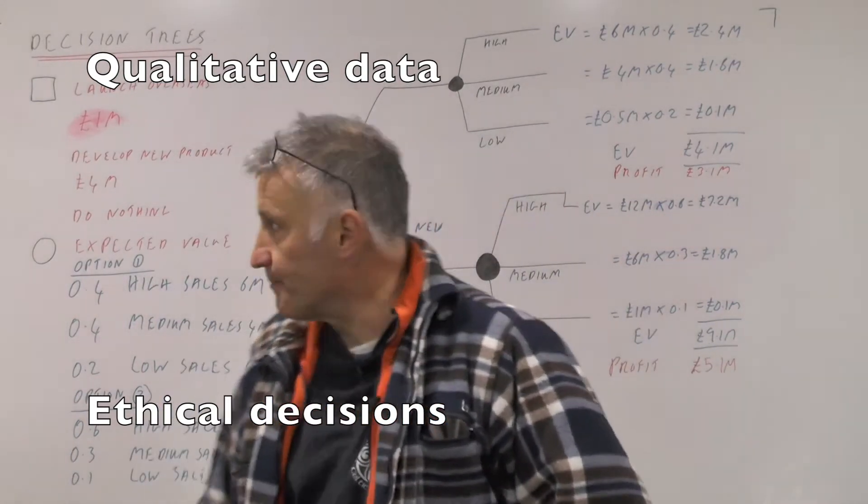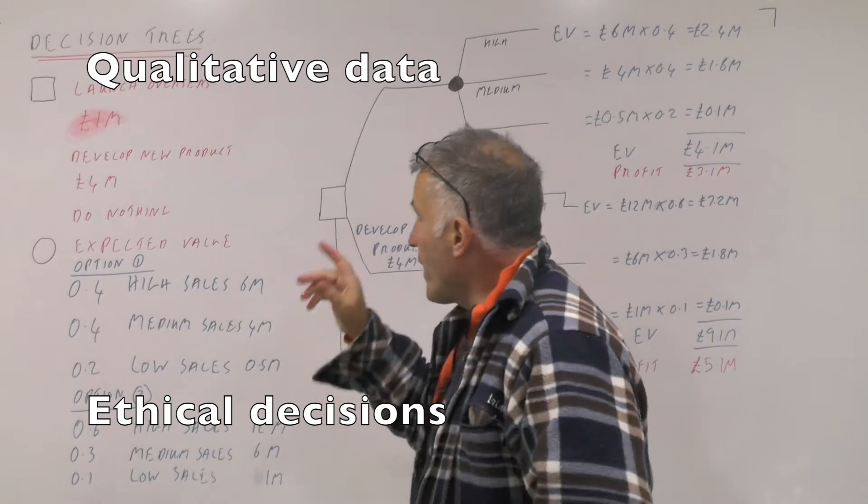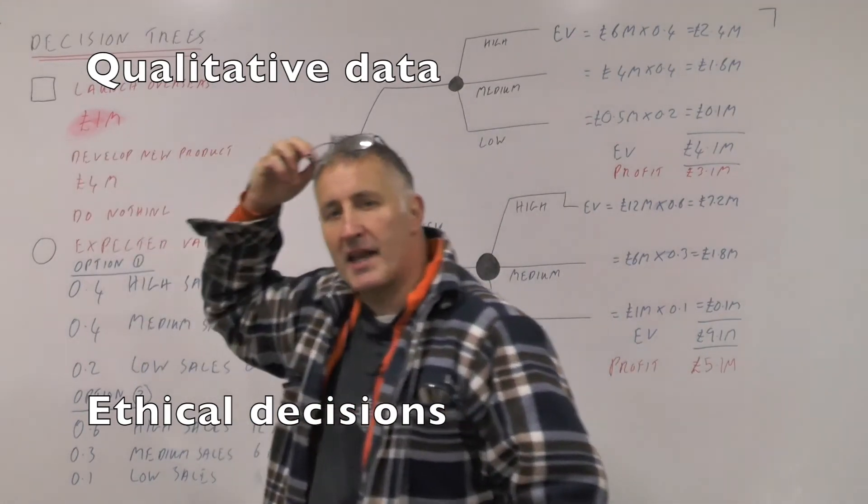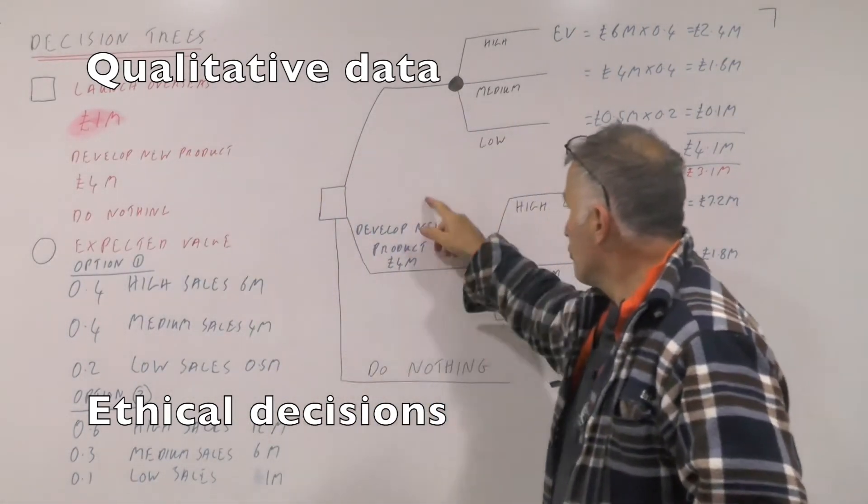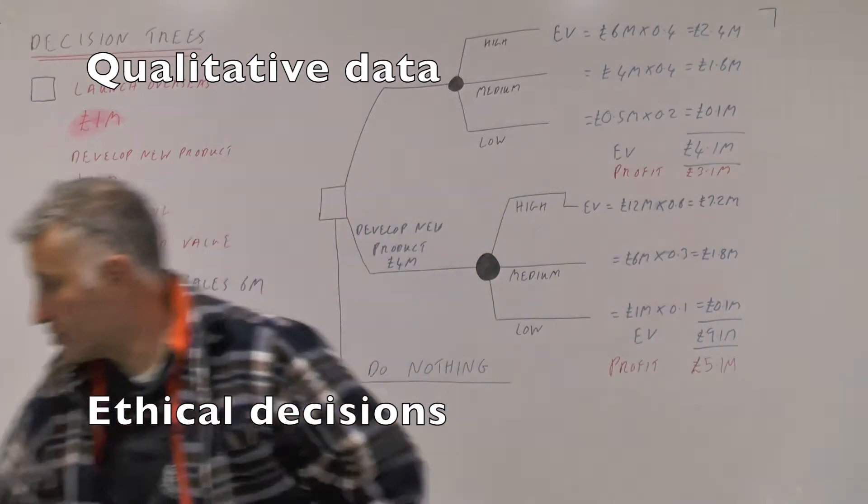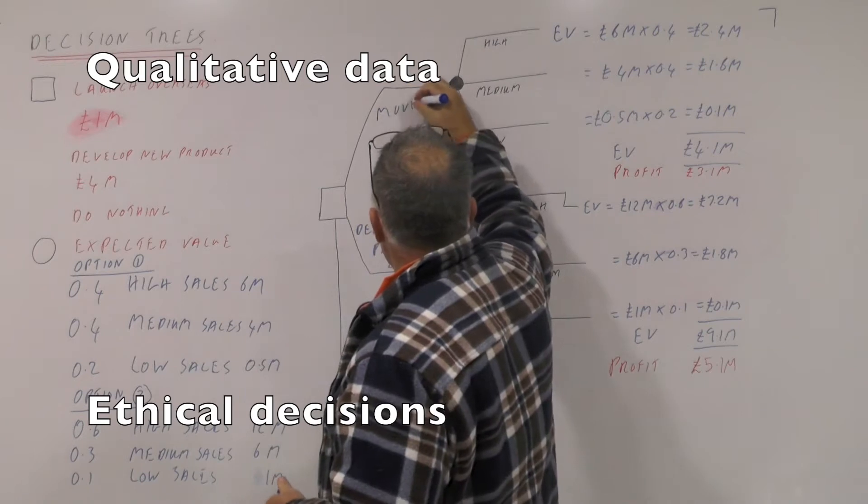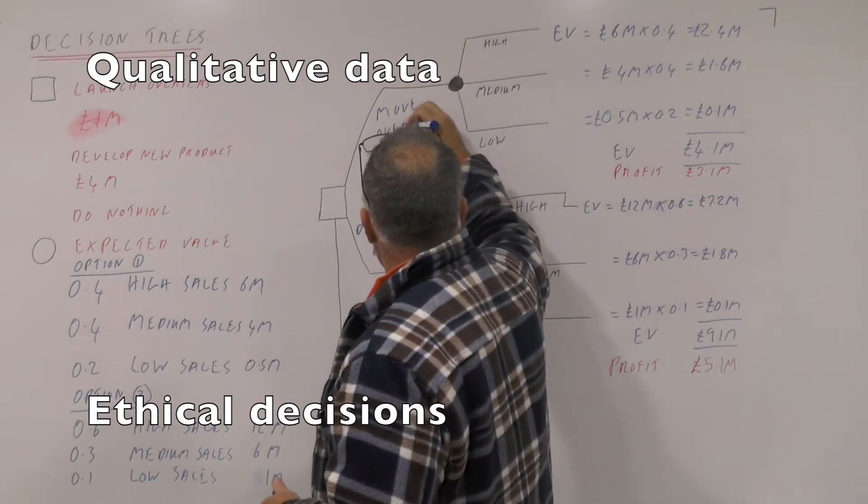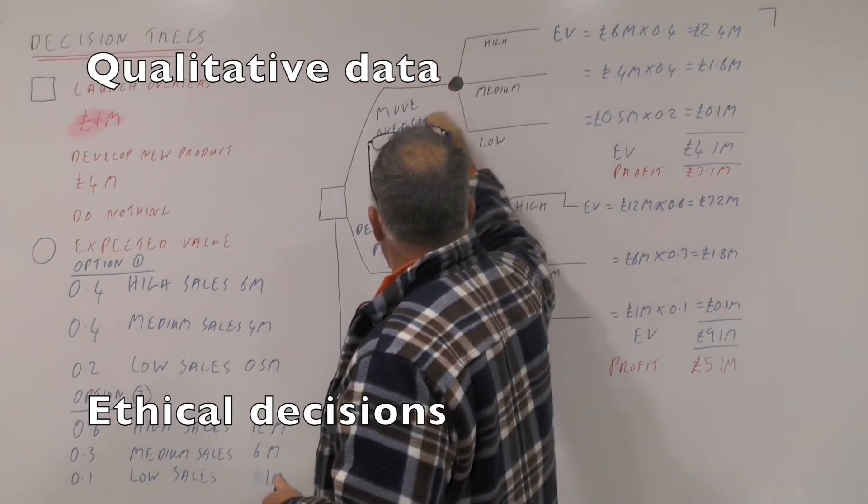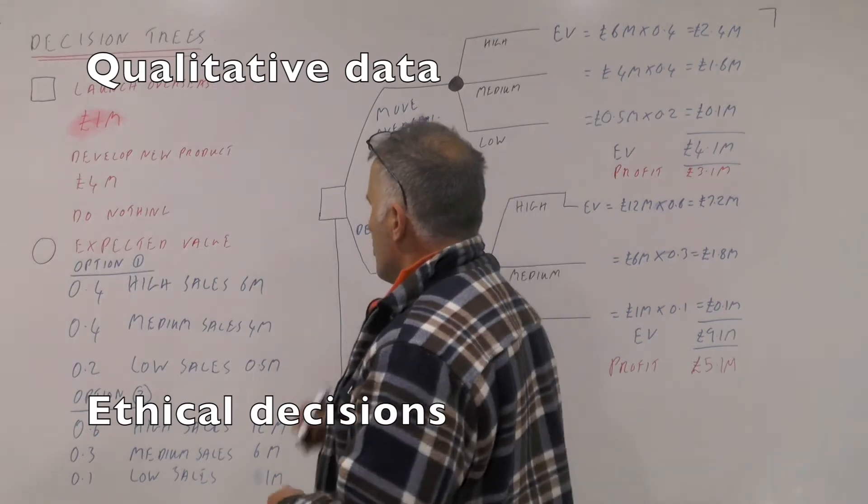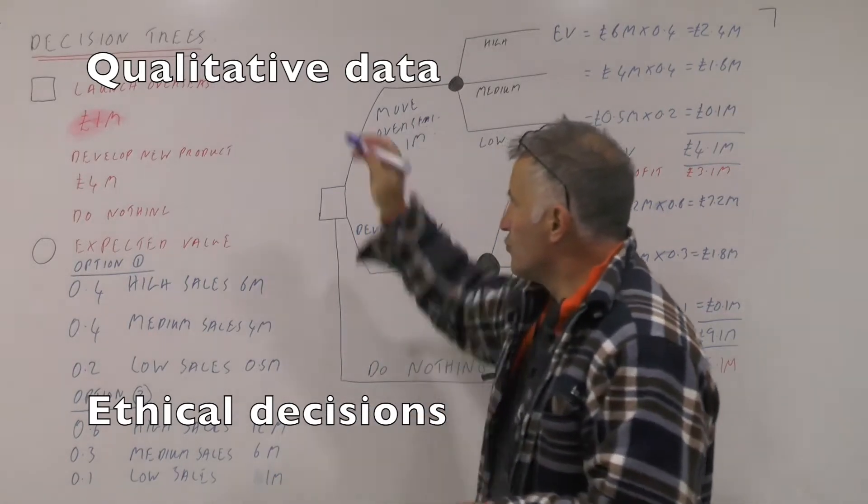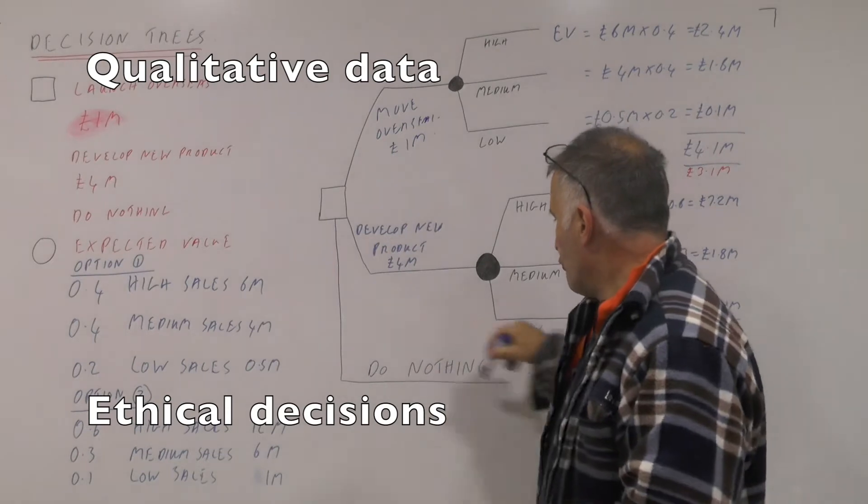What we have here is a square - that's where you make the decision. In this case, it's whether or not you develop a new product or whether you move overseas. The cost of that is £1 million. Launch overseas, develop new product, or do nothing at all - we're faced with three choices.